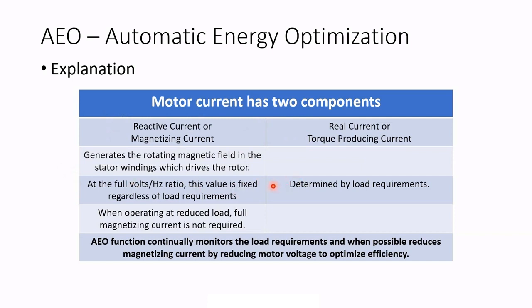The torque-producing current is dependent on the load and produces enough torque to drive the motor. When operating at reduced load, full magnetizing current is not required. That's going to happen frequently with fans and pumps — they're designed to run at reduced speed and will certainly be at reduced load, and also with dampers and valves closed. The AEO function continually monitors the load requirements and, when possible, reduces the magnetizing current by reducing motor voltage to optimize efficiency.